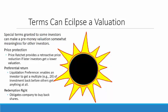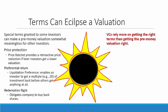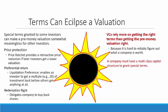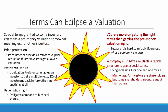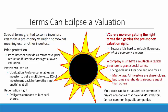Venture capitalists rely more on getting the right terms than on getting the pre-money valuation right, because it's so hard to reliably figure out what a company is worth. A company must have a multi-class capital structure to grant special terms. In a single class structure, investors are all for one and one for all. In a multi-class structure, all investors are shareholders, but some shareholders are more equal than others. Multi-class capital structures are common in private companies that have venture capital or private equity investors. They're far less common in public companies.